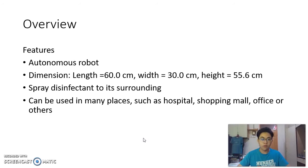For overview, the features of our robot is it is an autonomous robot. For dimensions, its length is 60cm, width is 30cm, height is 55cm. Its function is to spread disinfectant to its surrounding, so it can be used in many places such as hospital, shopping mall, office or others.